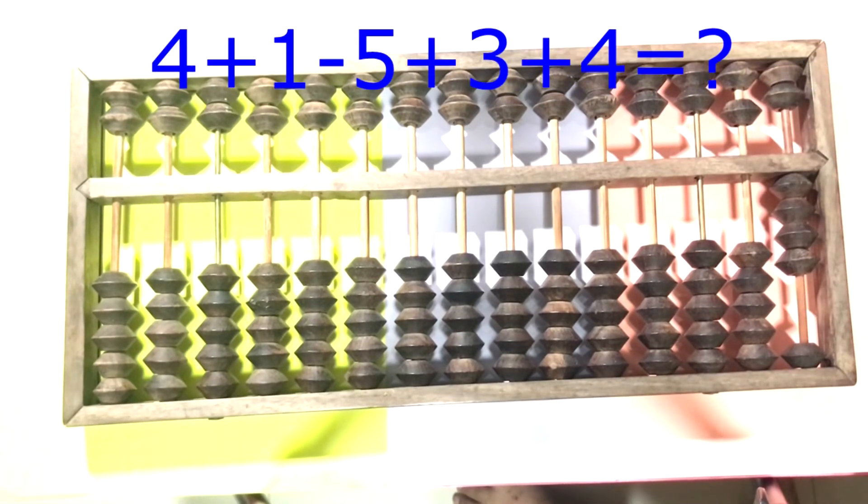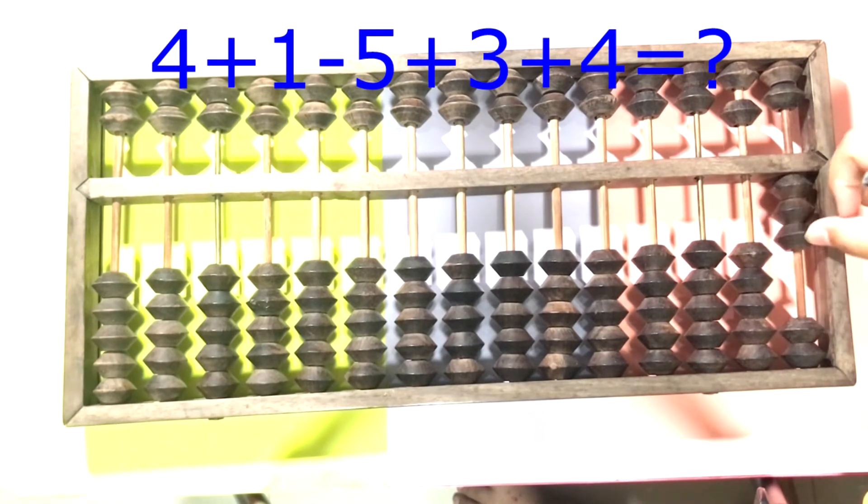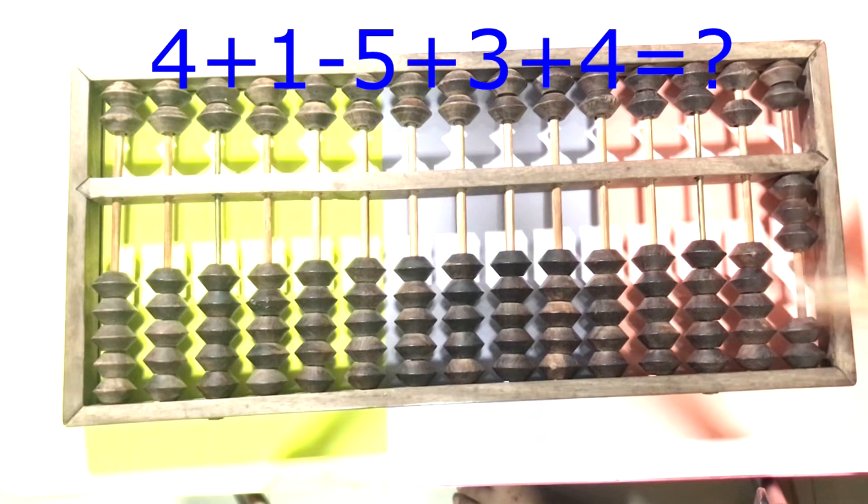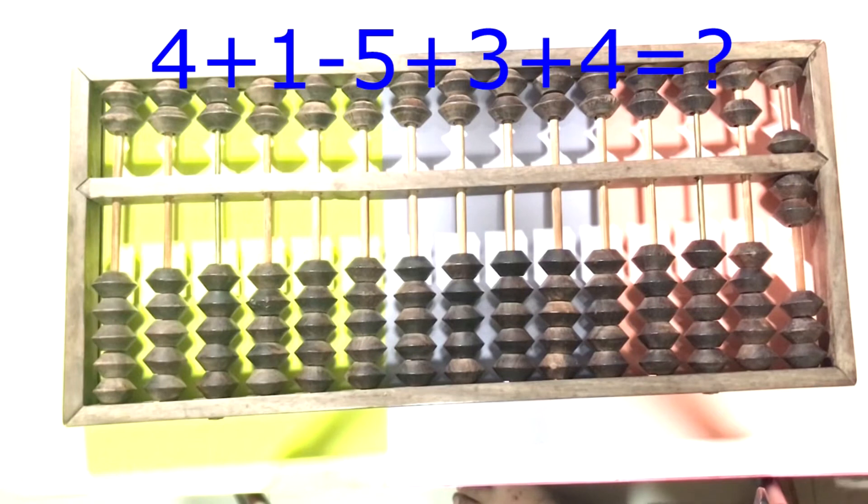The first example is 4 plus 1 minus 5 plus 3 and plus 4. We don't have 4 here, right? Only 2. So minus 1 and plus 5. And then the answer is 7.